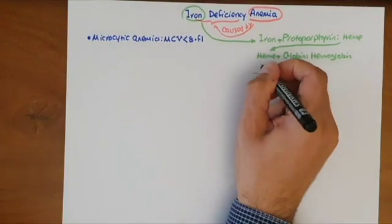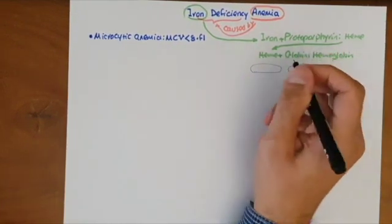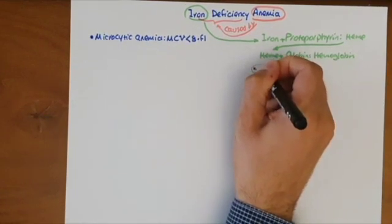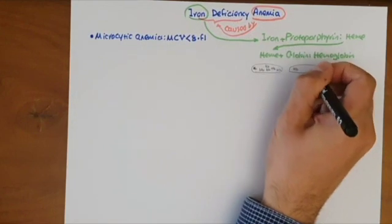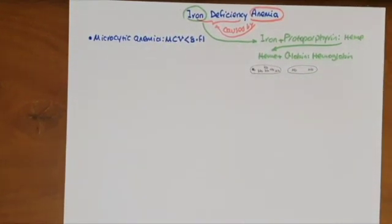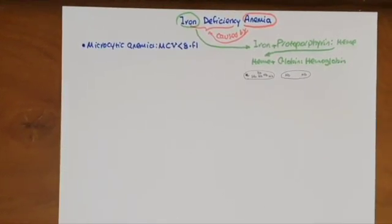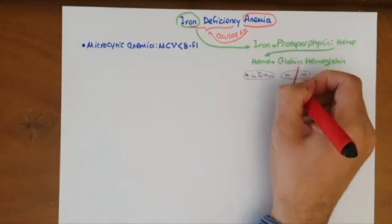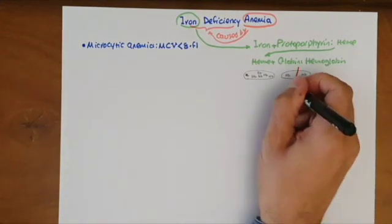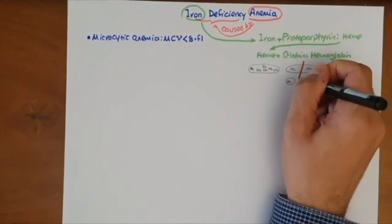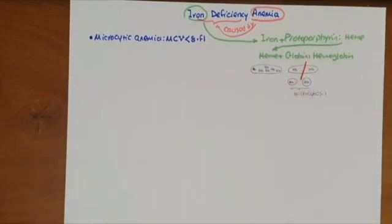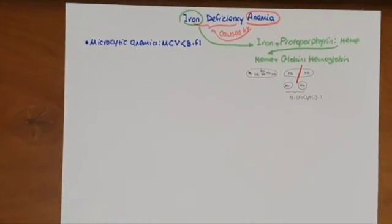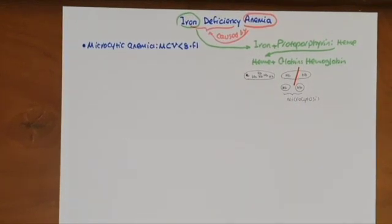Consider these two red blood cells. On the left, a red blood cell with sufficient hemoglobin (abbreviated Hb). On the right, a red blood cell with fewer hemoglobin. In a physiological response, the body maintains hemoglobin concentration in red blood cells close to normal by making the red blood cells smaller. This smaller size is called microcytosis, which is why we have microcytic anemia in iron deficiency and any other condition with a problem in making hemoglobin.